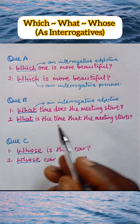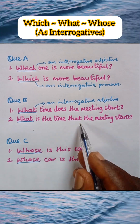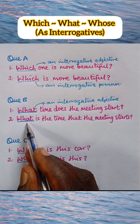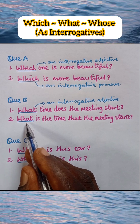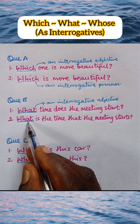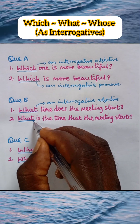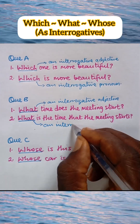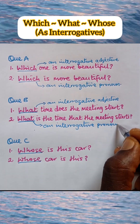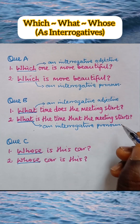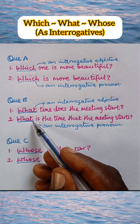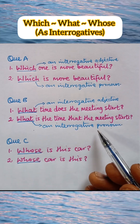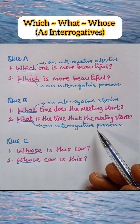And then number 2 says 'what is the time that the meeting starts?' 'What' here stands in place of a noun — it is not modifying any noun. So 'what' here is a pronoun and can best be described as an interrogative pronoun. So even though both of them are 'what,' whereas this is an interrogative adjective, this is an interrogative pronoun.